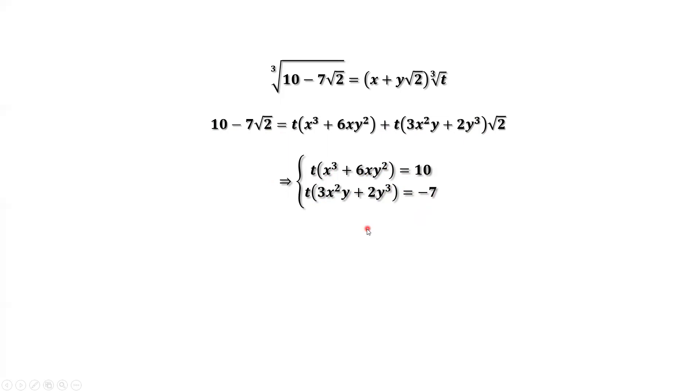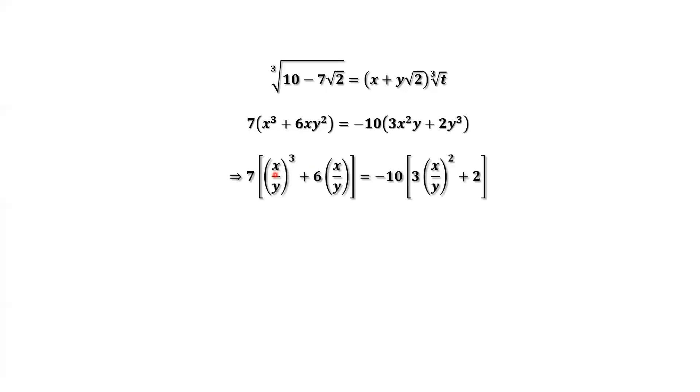We have two equations here. The first equation divided by the second equation. We can cancel t. Cross multiply. We have. We leave negative sign to 10. We are here now. Both sides divided by y to the power of 3.